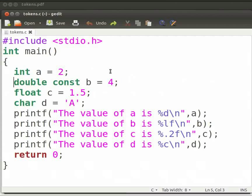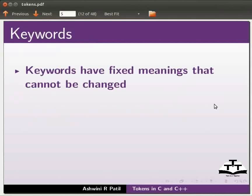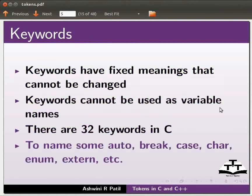Let us switch back to our slides to know more about keywords and constants. Keywords have fixed meanings that cannot be changed. Keywords cannot be used as variable names. There are 32 keywords in C. To name some, auto, break, case, char, enum, extern, etc.